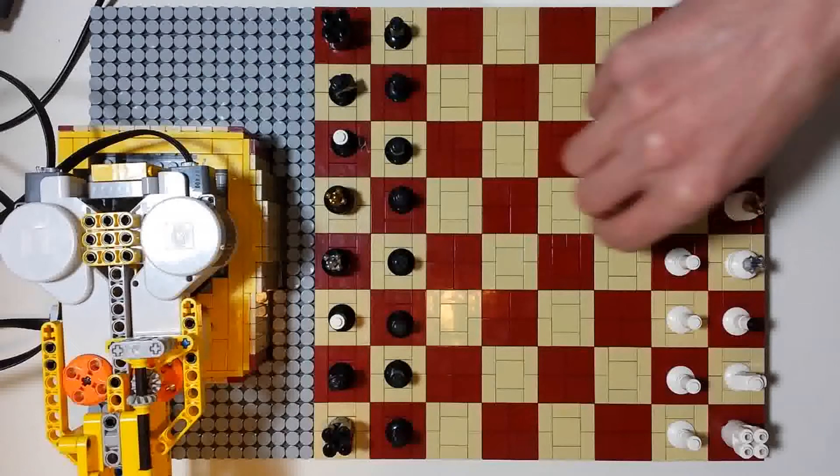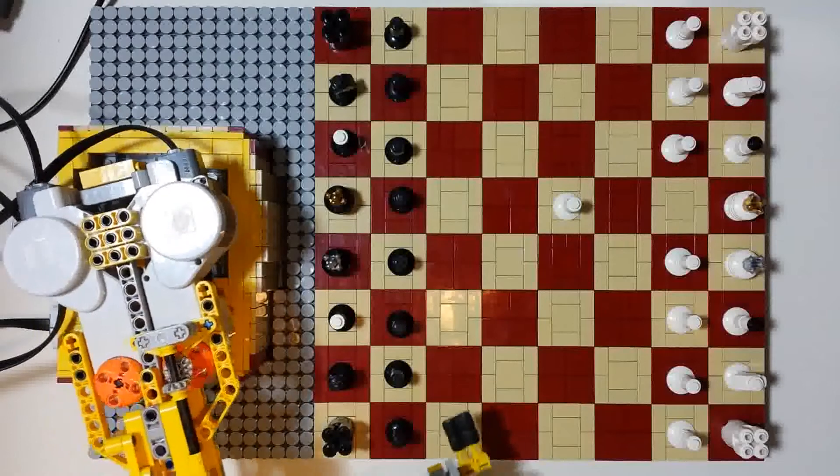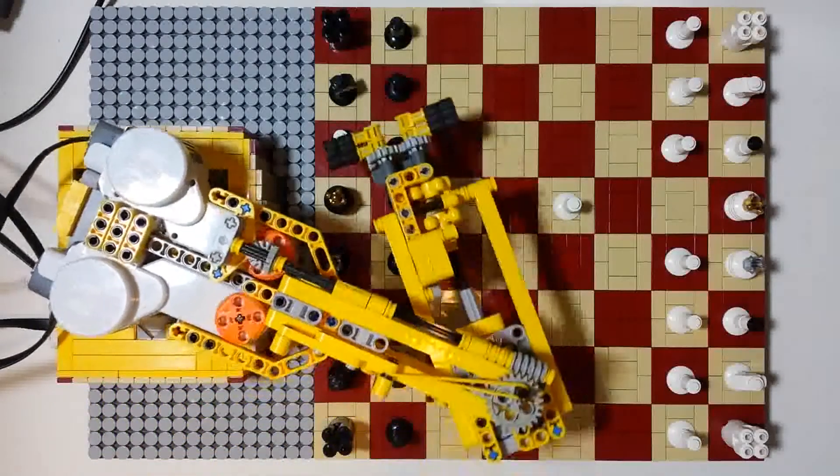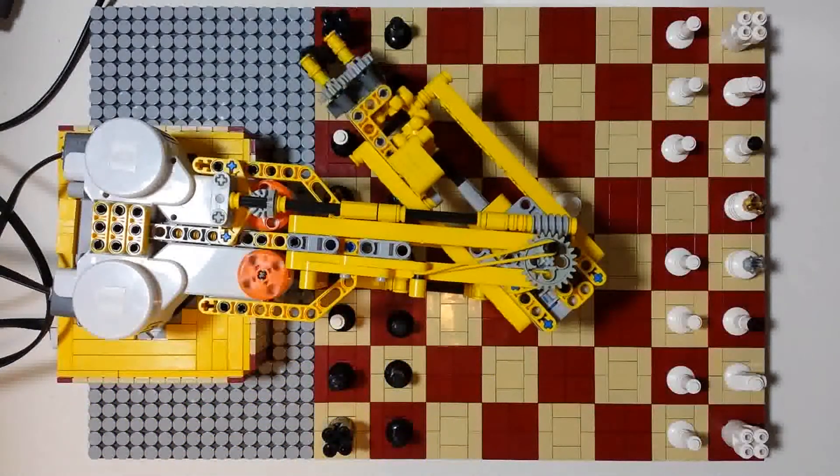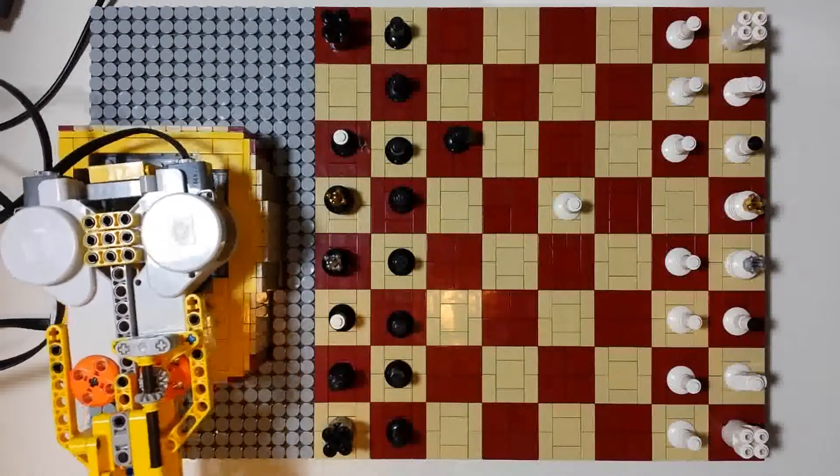So I open up strong with a pawn to e4. Nona enters the stage, she's a bit slow so let's speed her up. Knight to g6 might seem a good idea, I'll try and do the same.